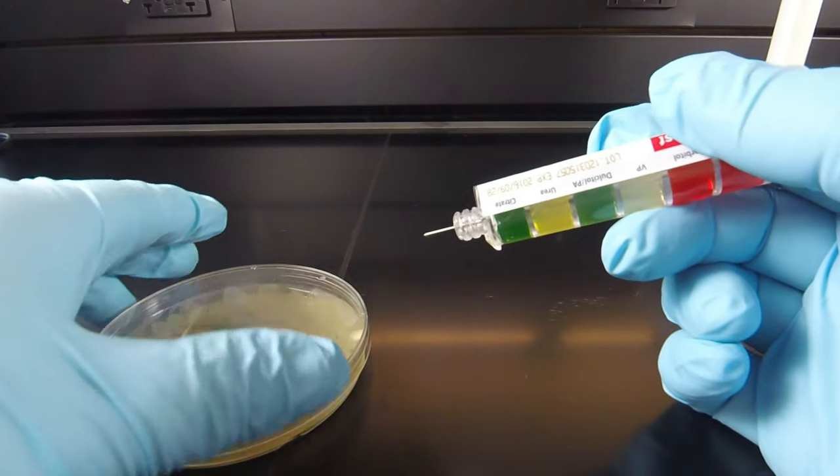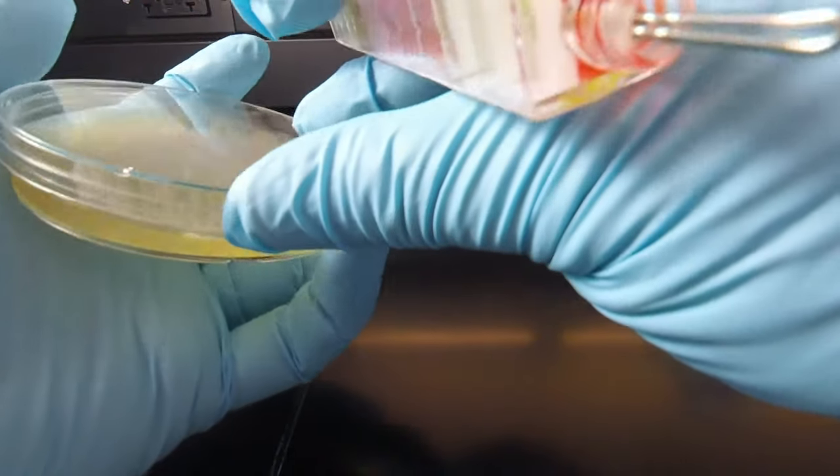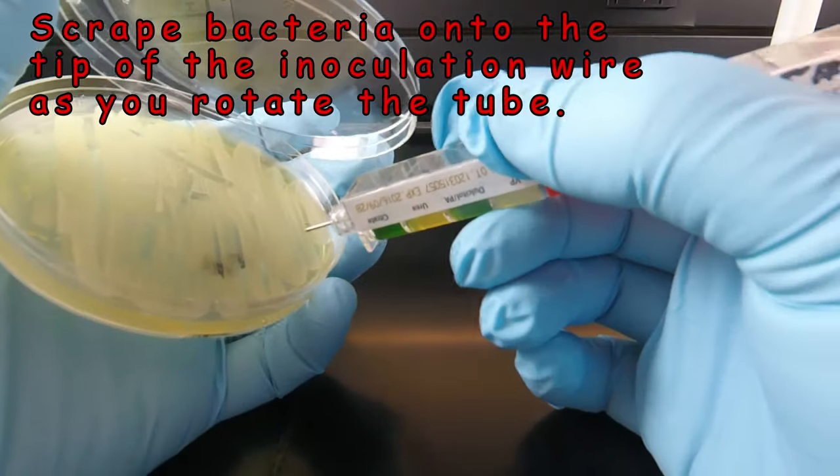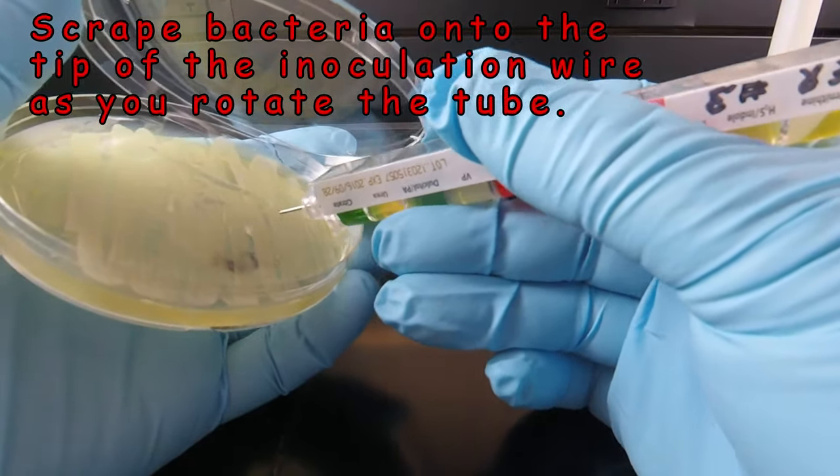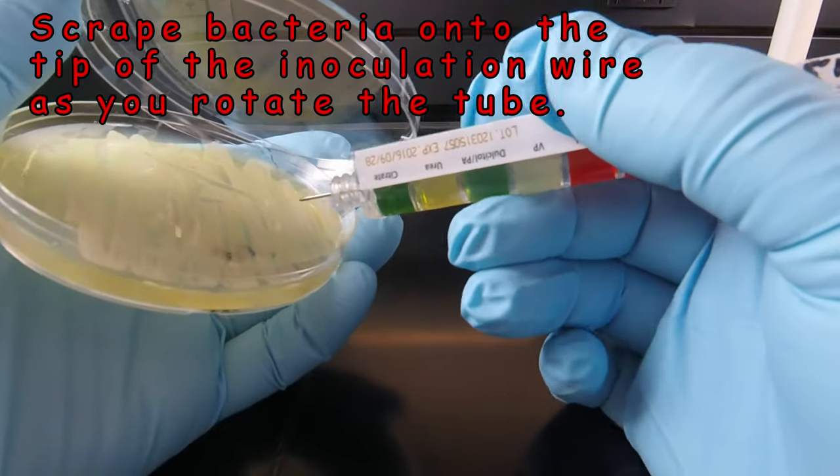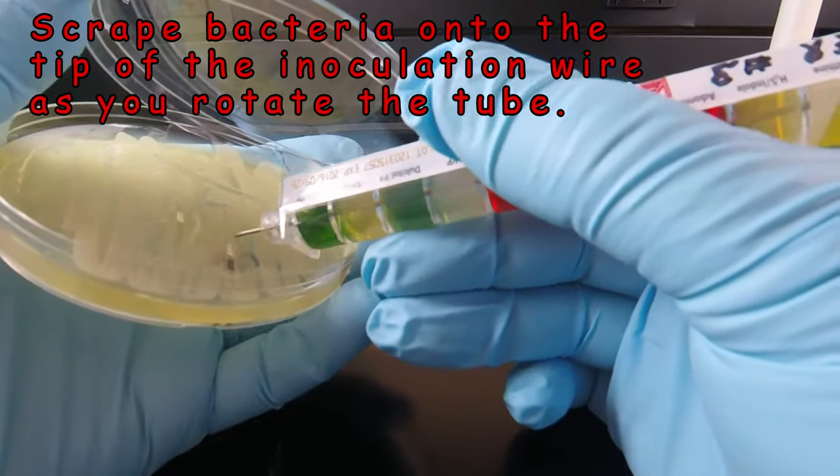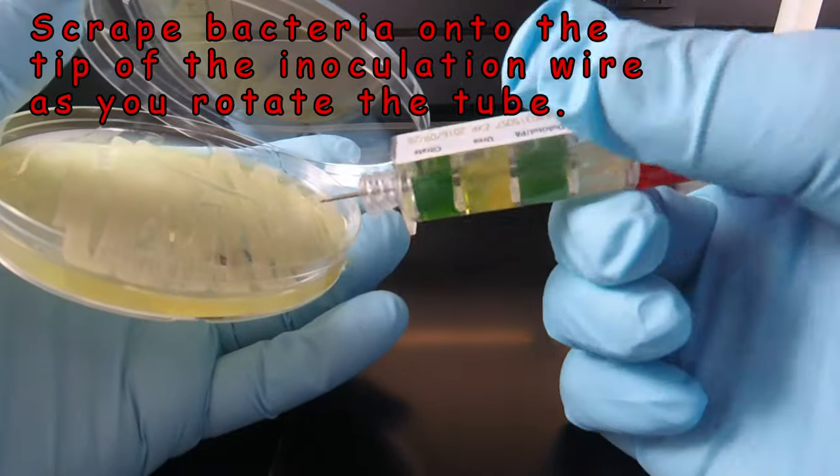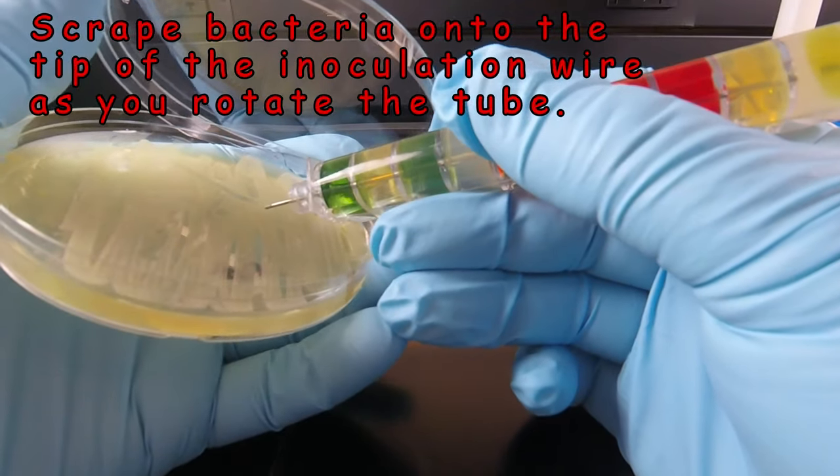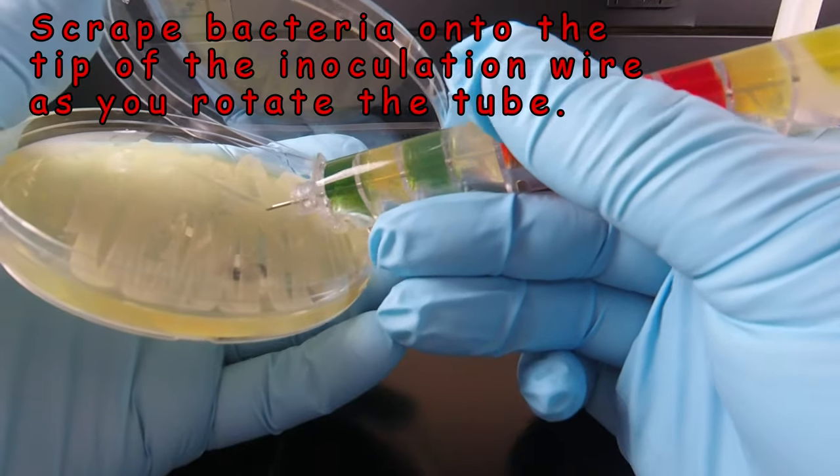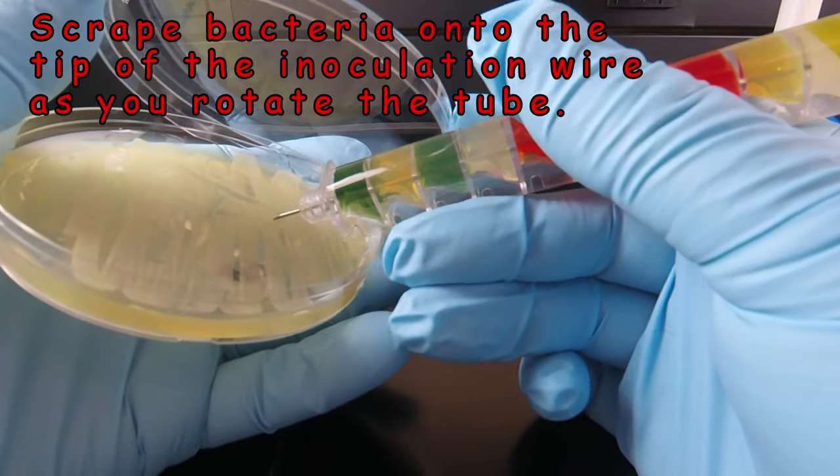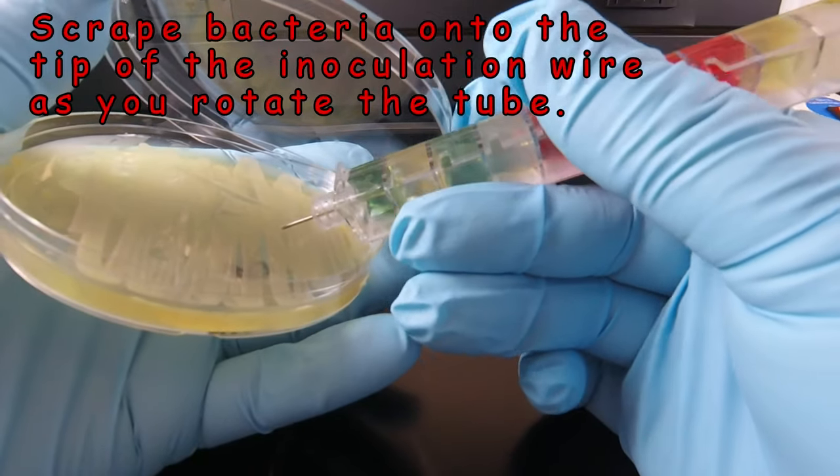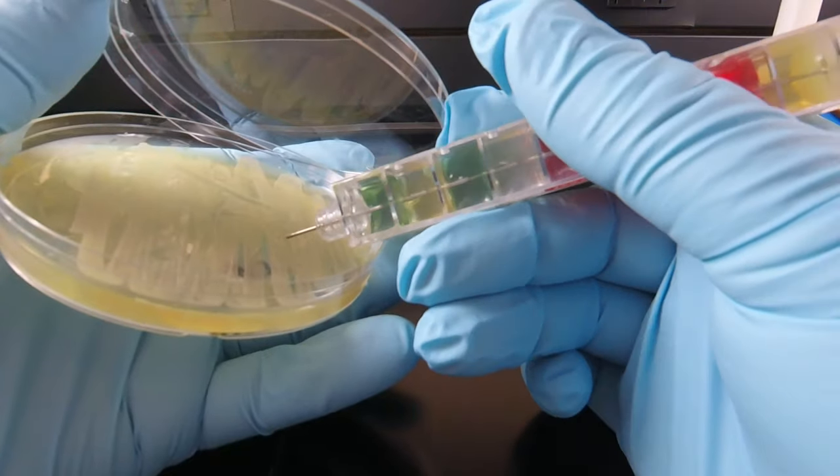Here is our bacterium, our unknown. To inoculate it, we're going to scrape off a little bit of bacteria, then rotate and scrape repeatedly, working all the way around the tube. What I'm doing is rotating the Entrapluri test, which allows us to get bacteria all over the tip. Notice I have it at enough angle that the wire is getting bacteria on it, but the plastic is not going into the bacteria.